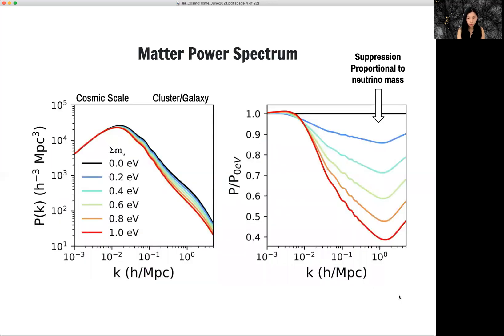What is the signature of massive neutrinos on cosmology? If we look at the matter power spectrum on the left-hand side, different colors are neutrinos of different masses while holding all other parameters constant.